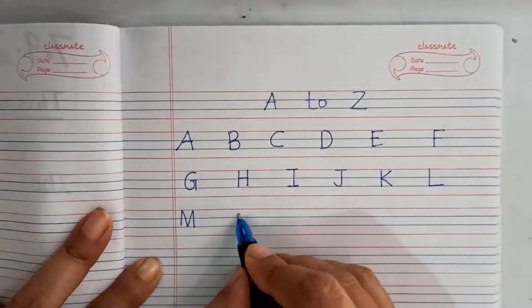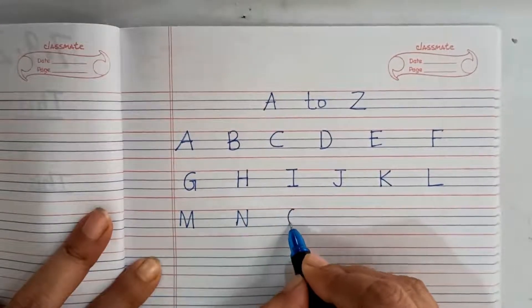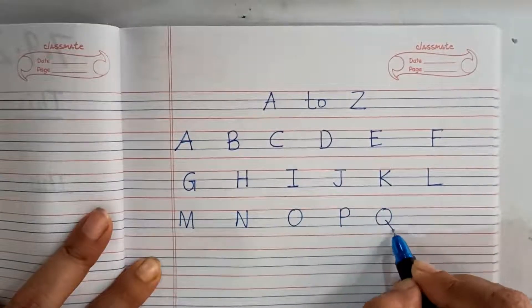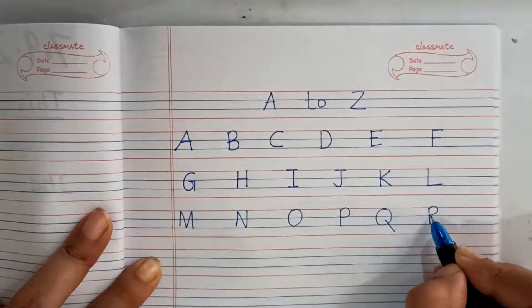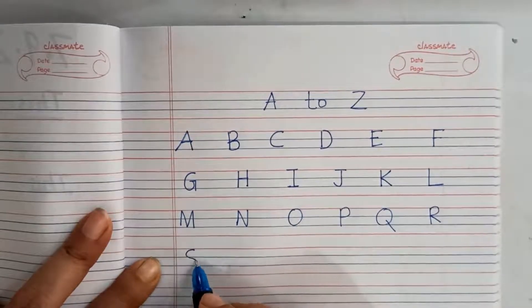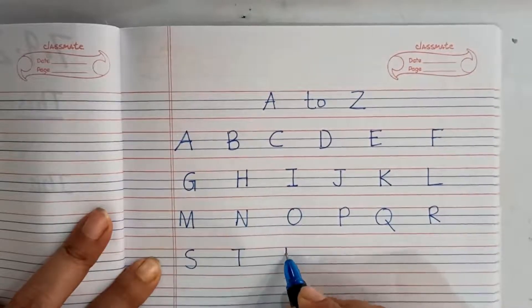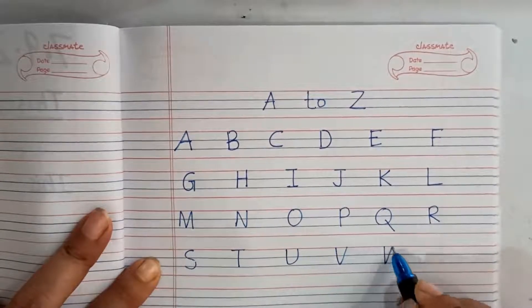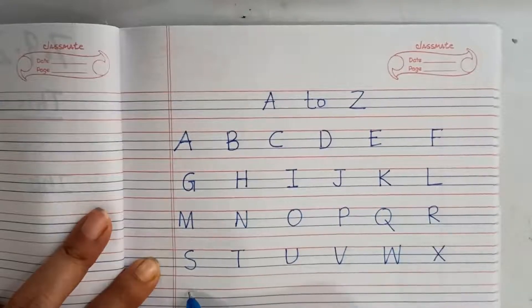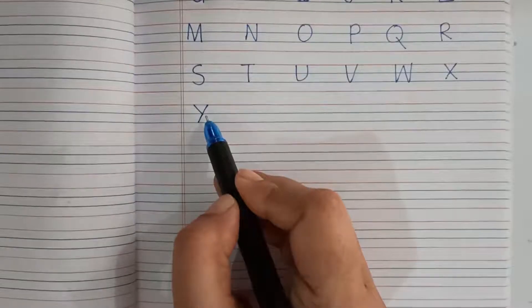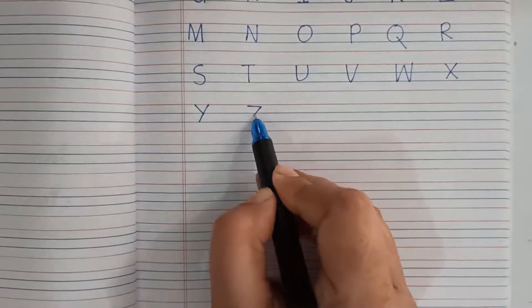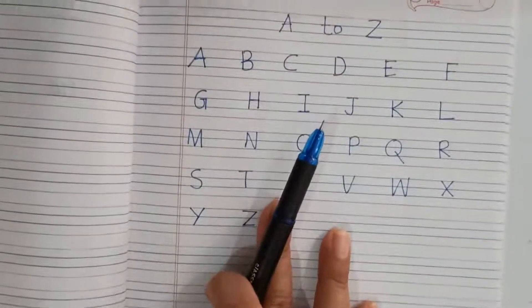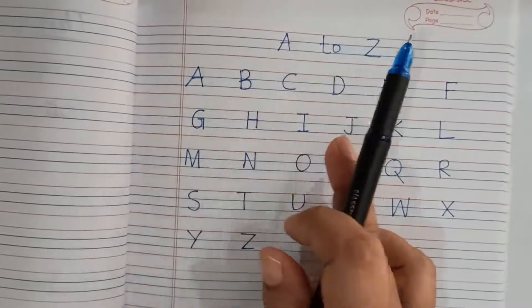Then M, N, O, P, Q, R. Here are S, T, U, V, W, X, Y, and Z. These are capital A to Z.